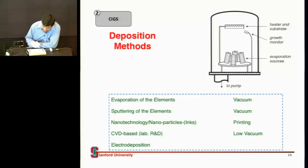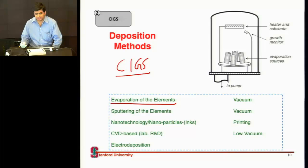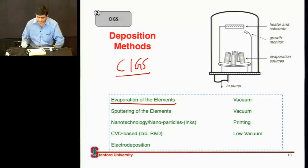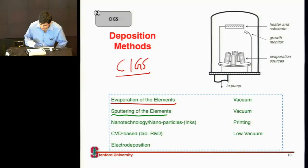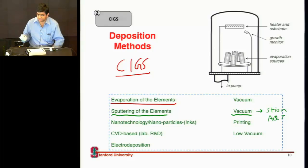You have these four elements, so it's very difficult to deposit all four of them. If you're doing it in a lab and want to demonstrate the best efficiency cells, you would do evaporation of these four different elements under very high vacuum — which is good for a lab but not for an industrial process. What is more commonly used in industry is sputtering these elements under lower vacuum. A lot of companies such as Stion or AKT use this method of sputtering.